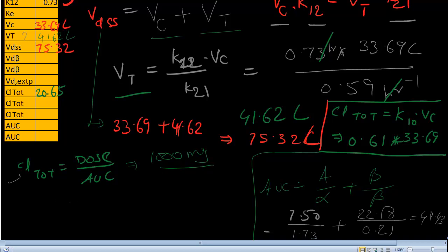So now, again, come back to the clearance. Dose over AUC, 1000 milligrams over AUC, that is 48.43. So what is the clearance total is 20.65. That is another method we can calculate clearance total. We'll get back to that. But let's go and calculate the VD beta first here.